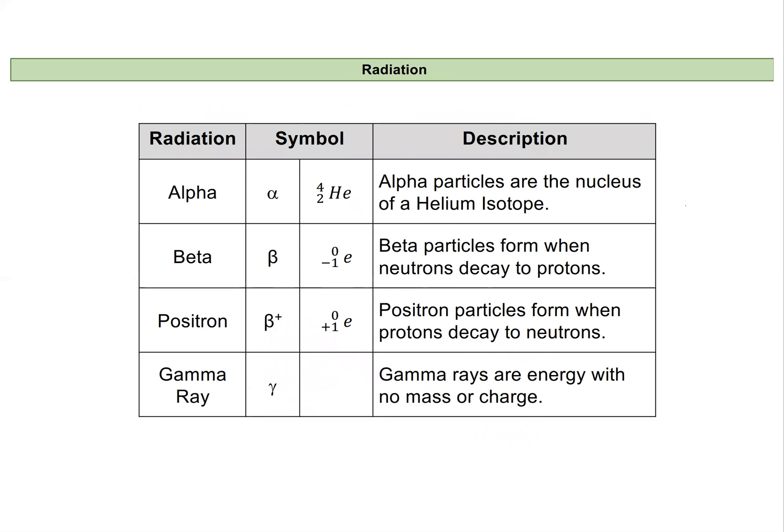And the type of particle that's emitted, there's a lot of them, but we're going to just focus on these three right here. Alpha particles, which are basically helium nuclei. They're particles that are two neutrons and two protons that are ejected from the nucleus.